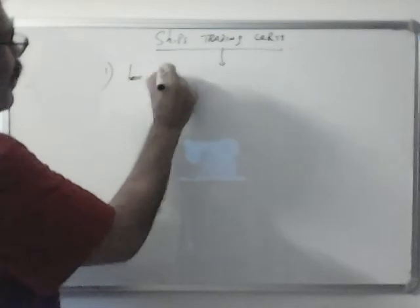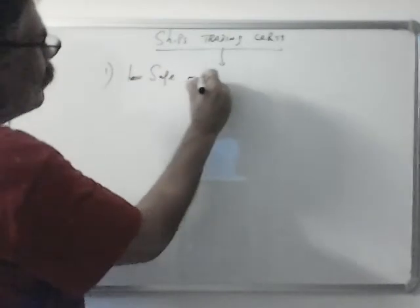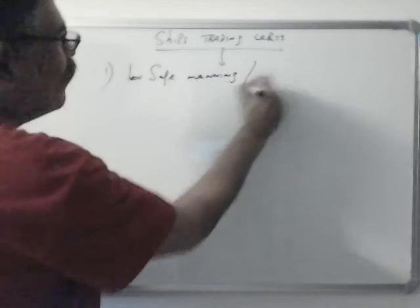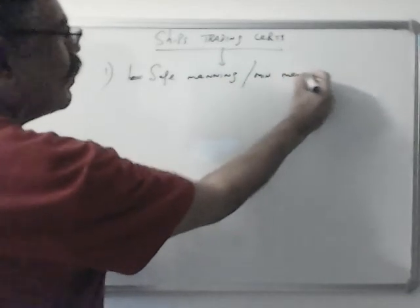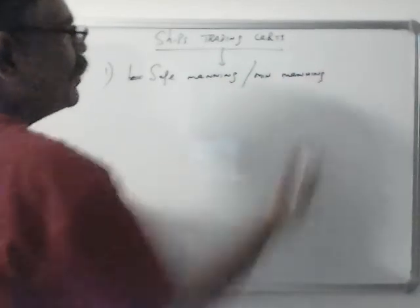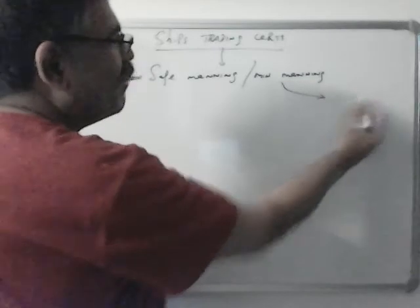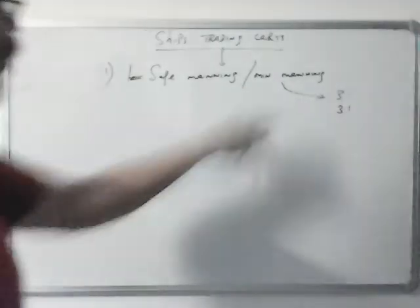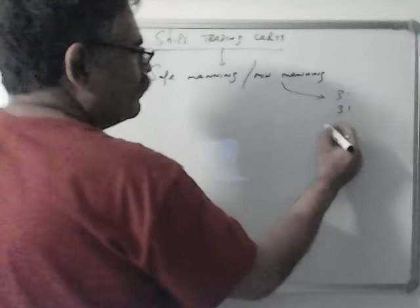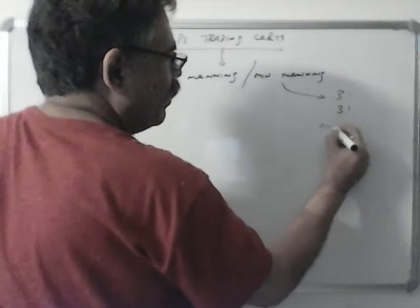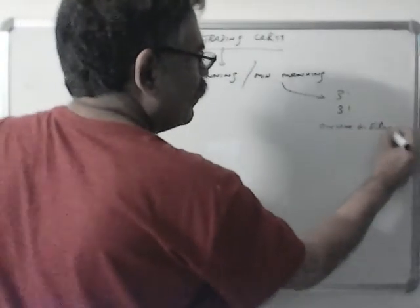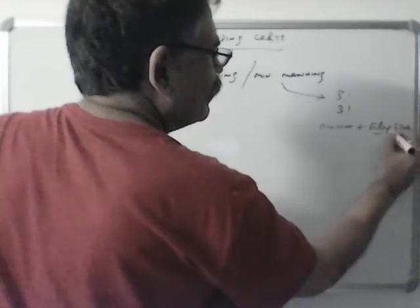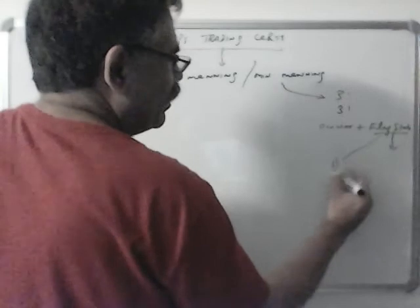There is the safe manning certificate, also known as minimum manning. This tells you the minimum crew required to be on board, like three engineers, three ABs, etc. Who decides this? It is decided by the ship owner along with the flag state. Basically the flag state decides it, based on the degree of automation.